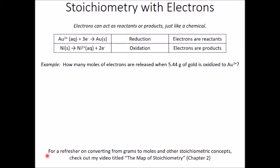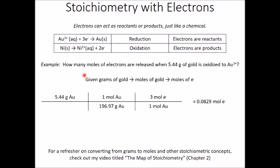But to solve this problem, we're given grams of gold initially. We need to get to moles of electrons, and the only way to get from one substance to another is through mole to mole conversions. So we'll need to go from grams of gold to moles of gold.